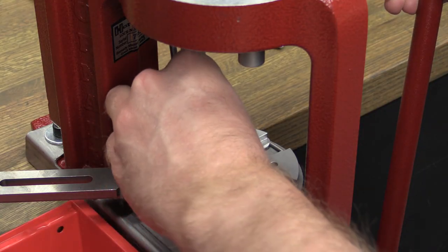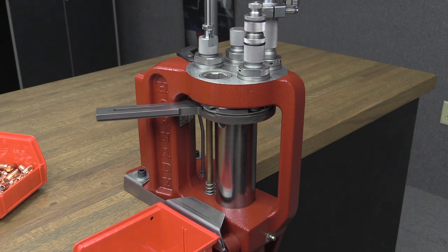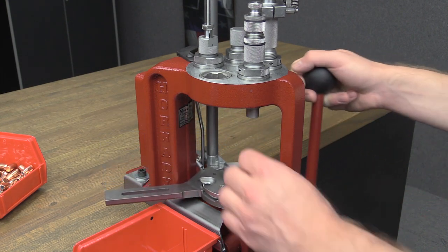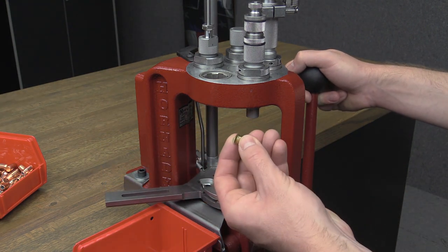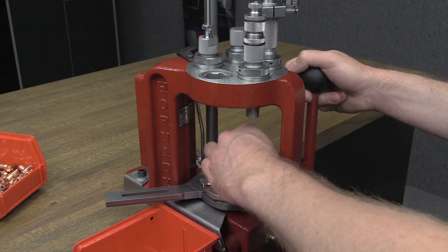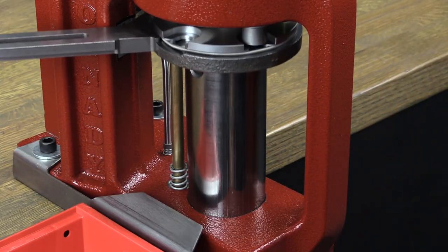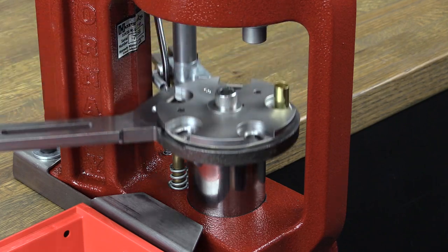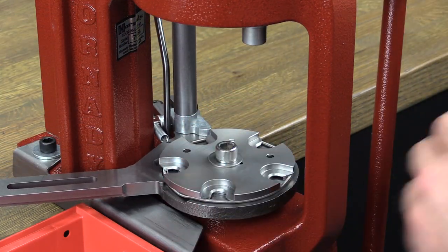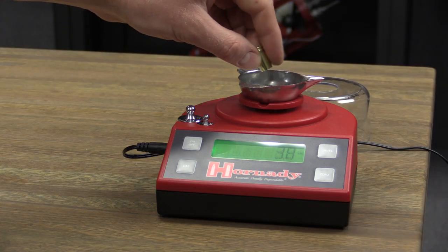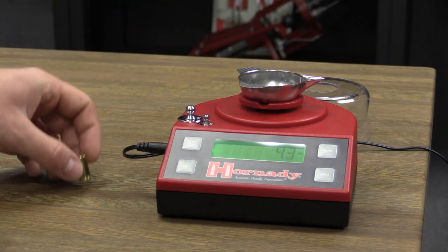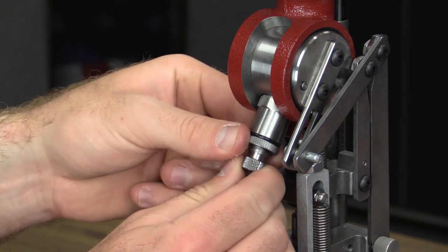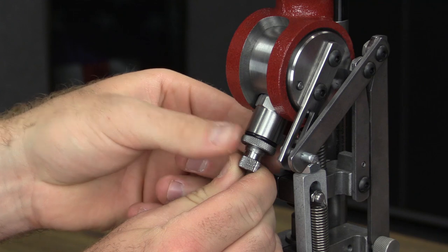Reinsert the case and check to make sure that the expander die is flaring the case properly. Next, drop powder in the case using the case activated powder drop and verify the weight on a properly calibrated scale. Changes to the powder charge can be made by adjusting the powder metering insert.